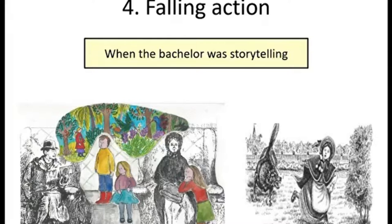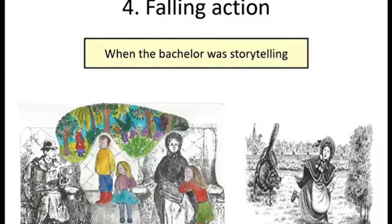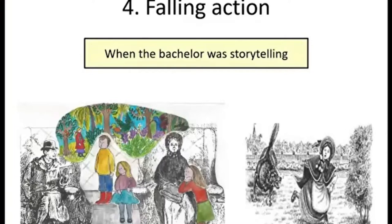Once upon a time, there was a little girl called Bertha who was extraordinarily good. The children's momentarily aroused interest began to flicker — all stories seemed dreadfully alike no matter who told them. She did all that she was told, was always truthful, kept her clothes clean, ate milk puddings as though they were jam tarts, learned her lessons perfectly, and was polite in her manners. 'Was she pretty?' asked the bigger of the small girls. 'Not as pretty as any of you,' said the bachelor, 'but she was horribly good.' There was a wave of reaction in favor of the story — the word 'horrible' in connection with goodness was a novelty. 'Where were there any sheep in the park?' demanded one child. 'No,' said the bachelor, 'there were no sheep.' 'Why weren't there any sheep?' came the inevitable question.